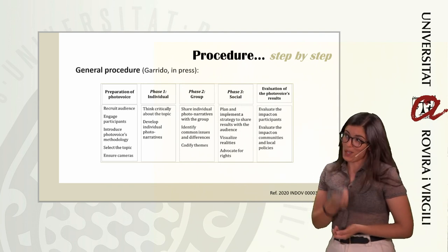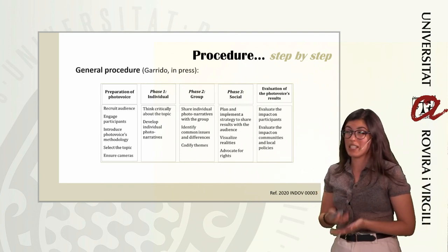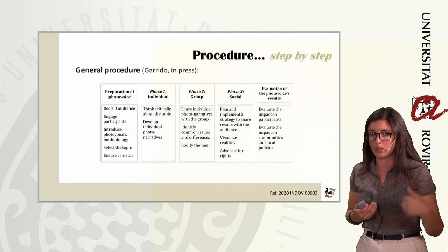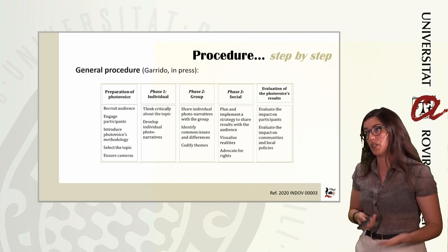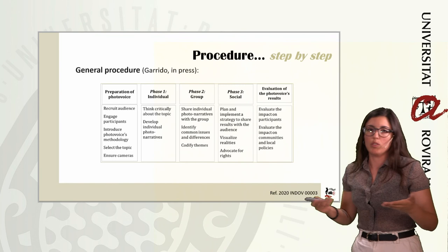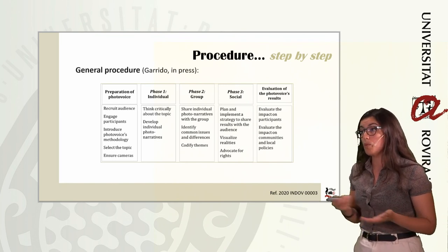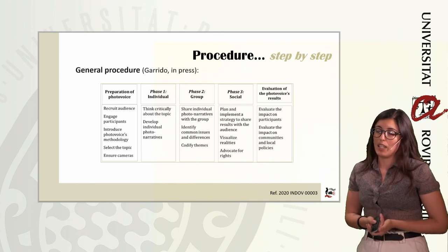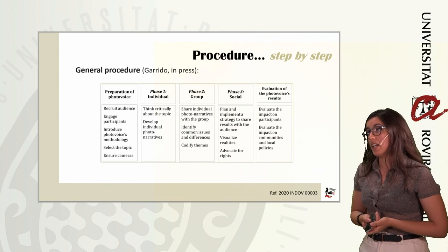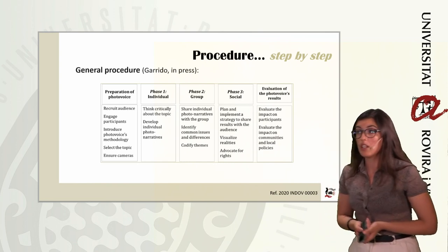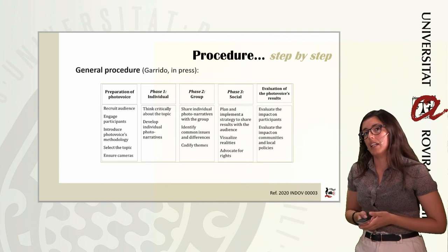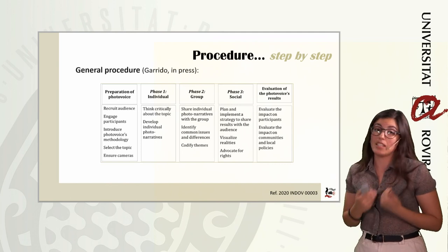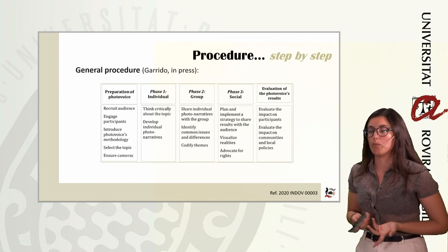After that, we go to phase three, which consists of planning and implementing a strategy to share the results with the rest of the community. It is oriented to make visible the realities of the community and advocate for their rights. Finally, the last phase is the evaluation of PhotoVoice results — evaluating the impact not only on participants, but also on the community and on local policies.